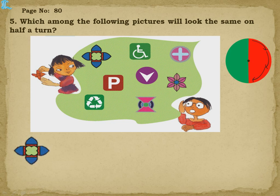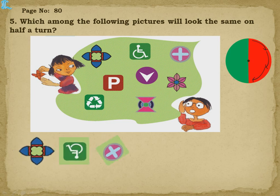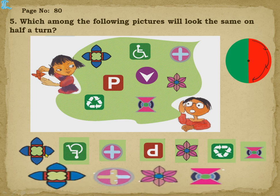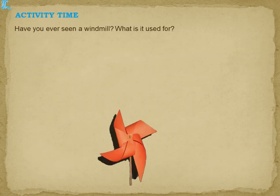Now, which among the following pictures will look the same on half a turn? Taking each shape one by one and giving a half turn: the first shape is the same after half a turn; a plus sign is also similar; a 'P' sign is not similar; a flower shape looks the same after half a turn; another shape with pointing top is different because the top and bottom swap. One more shape is also the same.